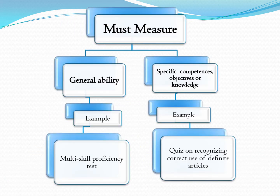The next thing about a test is that it must measure something. What it measures may be a general ability of a person, or it may be specific competencies, objectives or knowledge. For example, a test may be in the form of a quiz on recognizing the correct use of definite articles — these are examples of measuring.